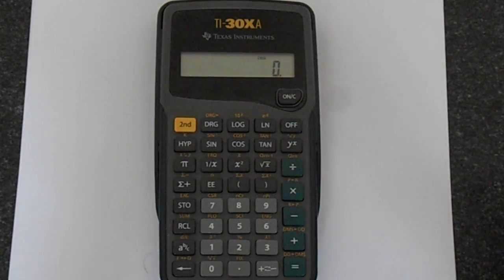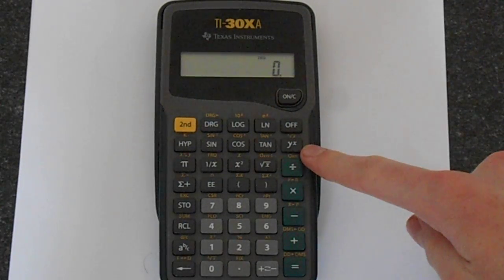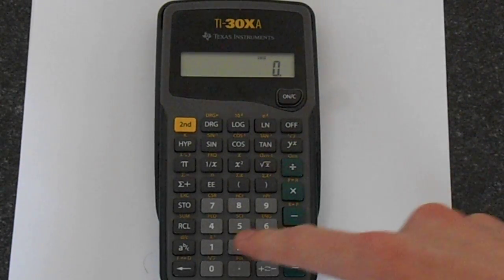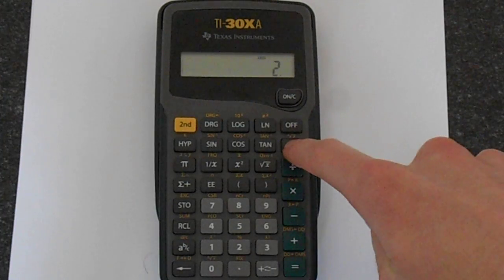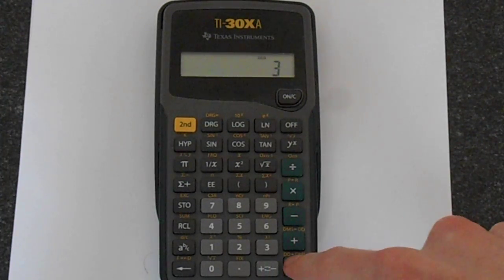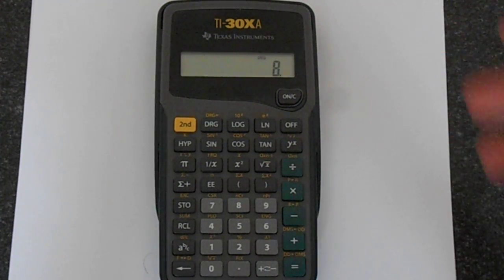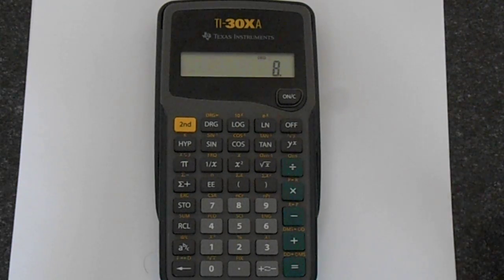So let's start with finding 2 cubed. To do this we're going to need to use this y to the x button here. So if we put in 2 and press y to the x and then 3 equals, we should get 8. 2 times 2 times 2 is of course 8.